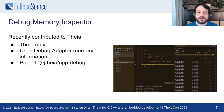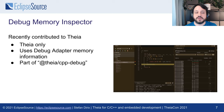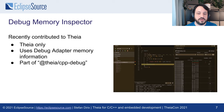I wanted to highlight the Debug Memory Inspector. It was recently contributed to Theia by Ericsson. It's Theia-only and it's a memory view. It uses the debug adapter memory information and is part of the Theia CPP debug package. However, technically it's not reliant on CPP — you can connect arbitrary sources to it, so it can be used for all kinds of use cases and languages.